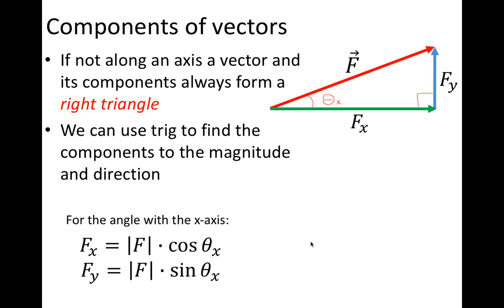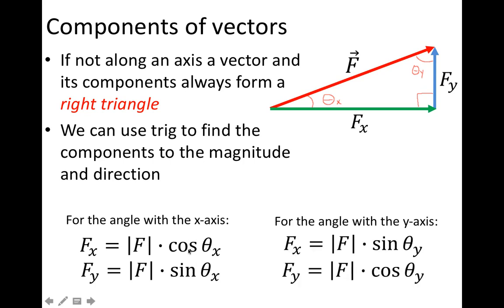Nine out of ten problems are going to involve the angle being made with the x-axis. Occasionally we will see problems involving the angle with the y-axis, and in that case what we're going to do is trade the sine and cosine. You can use the shortcuts over here if the angle given is made with the x-axis, and we can use the shortcuts over here if the angle is made with the y-axis. I went ahead and put these shortcut equations on your equation sheet.